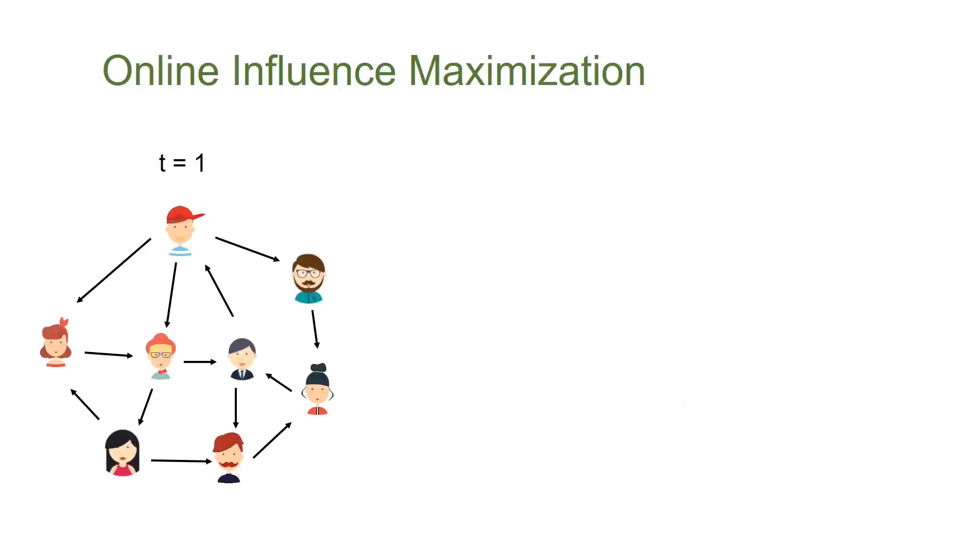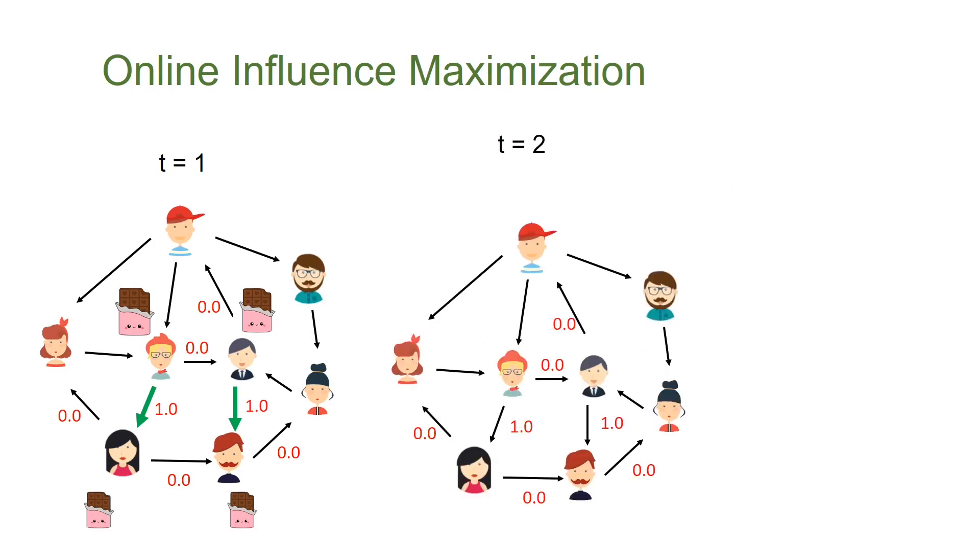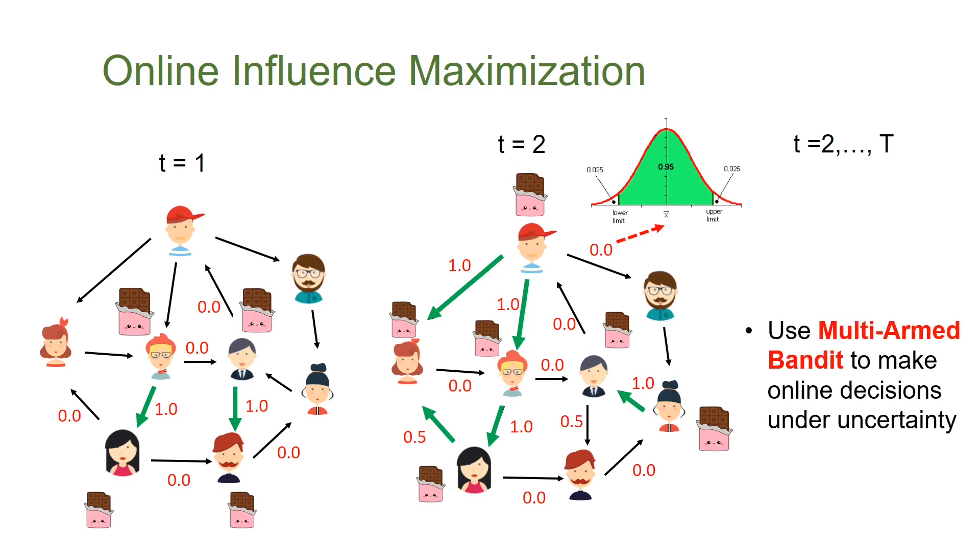For example, at the first interaction, we pick some users and observe the spread of influence of these users, from which we get an initial estimate of these activation probabilities. Then after the next interaction, we do another round of selection based on that. Then we get more observations and update the activation probabilities accordingly. During this online learning process, we need to consider the uncertainty in our online estimate because we have only limited observations. Multi-armed bandit solutions can help us make such decisions under uncertainty.